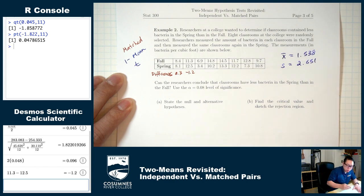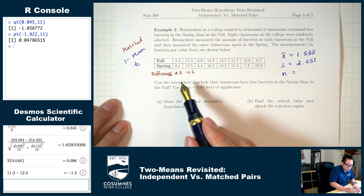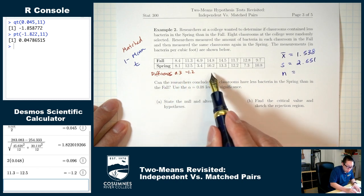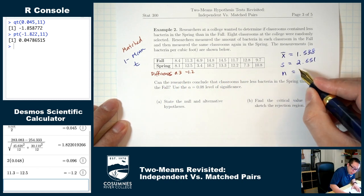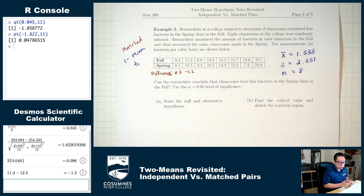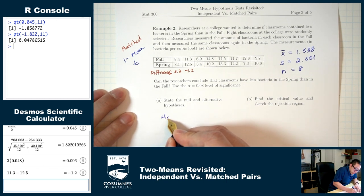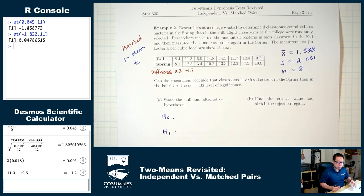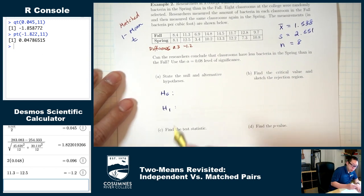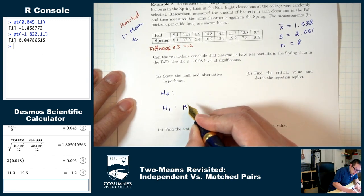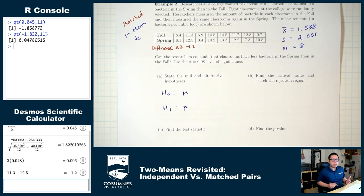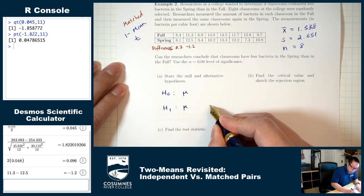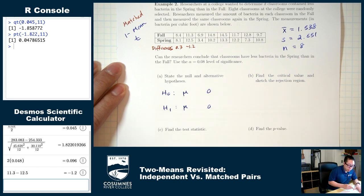The sample size is the number of differences — counting them gives eight, or we could get it from the problem: there are eight classrooms. Part A: state H0 and H1. We're talking about one mean, so we use a single mu symbol. For the matched situation, we always compare against zero. H0: mu = 0.